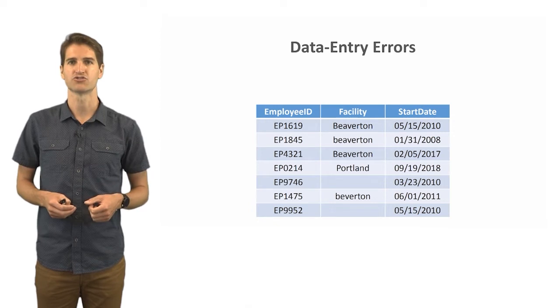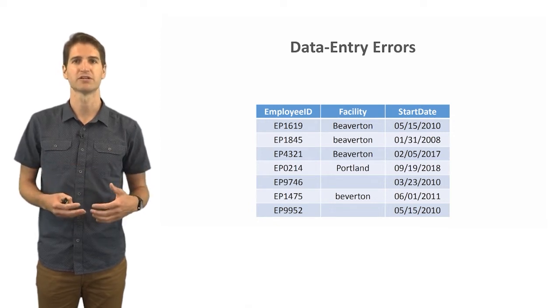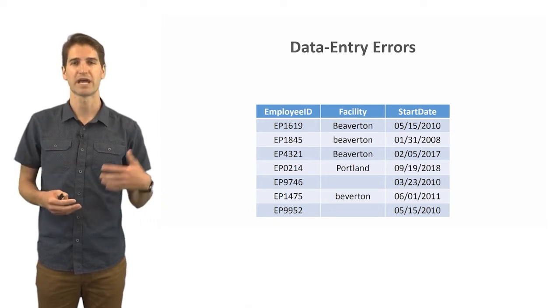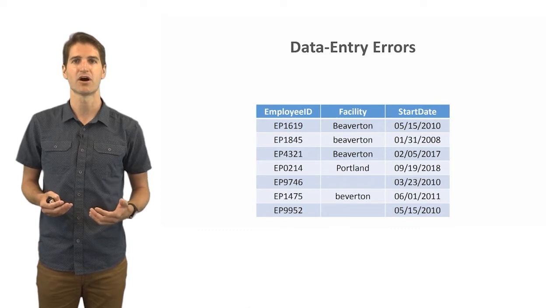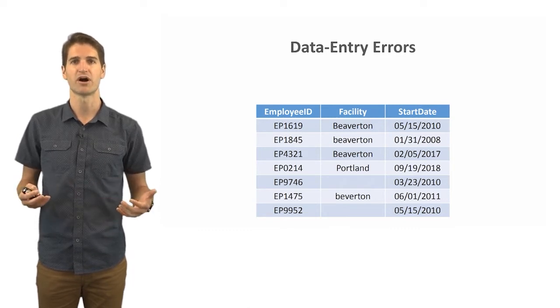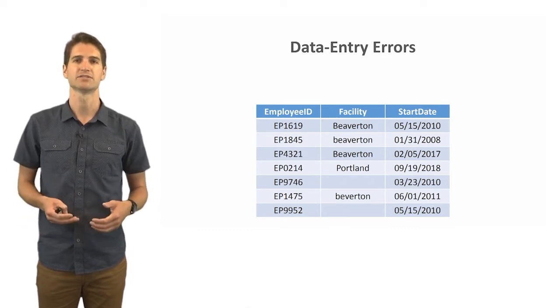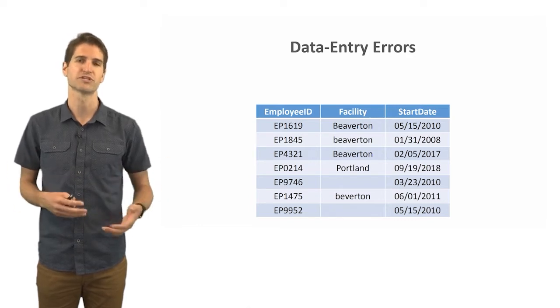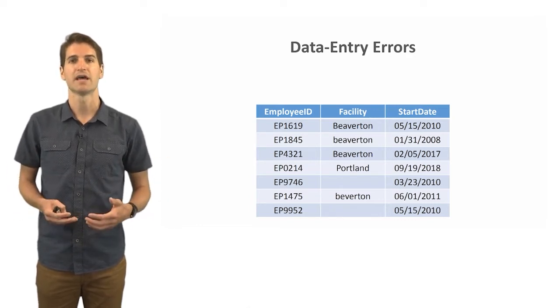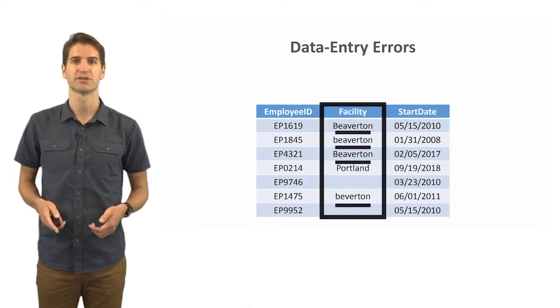Let's start with those data entry errors. Here we see a table that includes employee data. We have employee ID in the left-hand column, facility is the middle column, and start date is the start date for these employees. Each row represents a unique employee's data and in this case let's start with facility here.